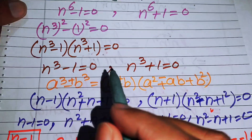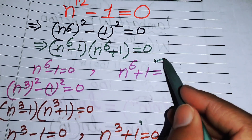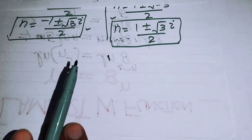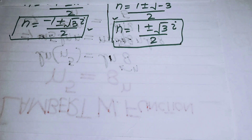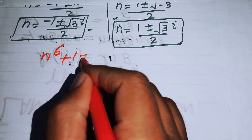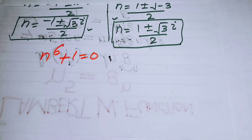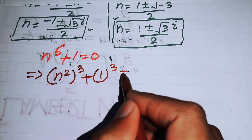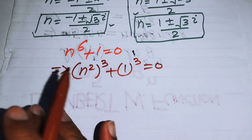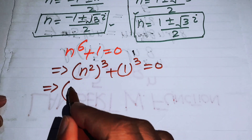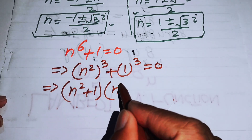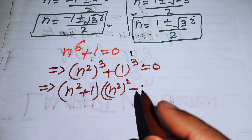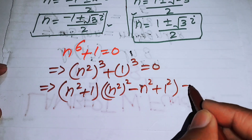So we have found six roots from the first case. Now we move to solve the second case: n to the power of 6 plus 1 equals 0. We write this equation as n squared cubed plus 1 cubed equals 0. Applying the sum of cubes formula, we write this as n squared plus 1, times n to the power of 4 minus n squared plus 1, equals 0.